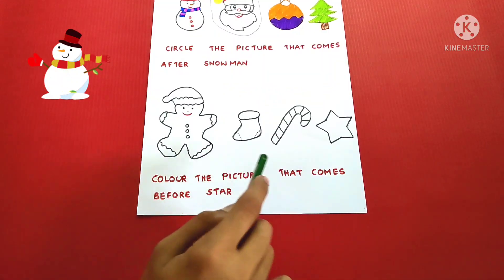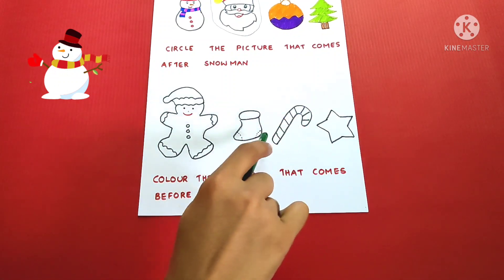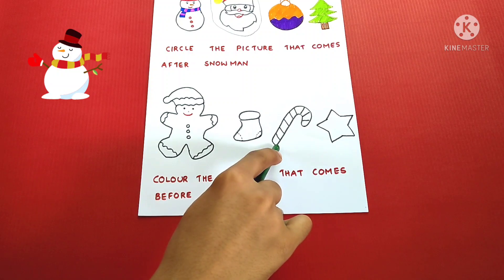Color the picture that comes before star. Before star comes candy stick. So we have to color candy stick.